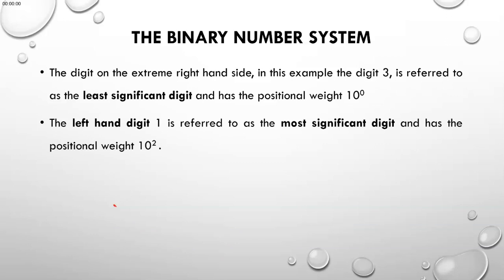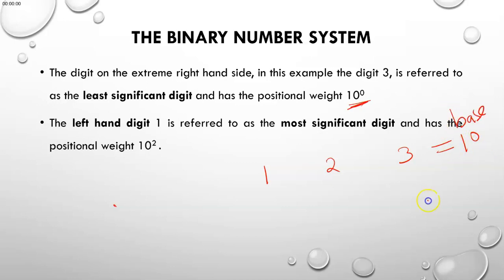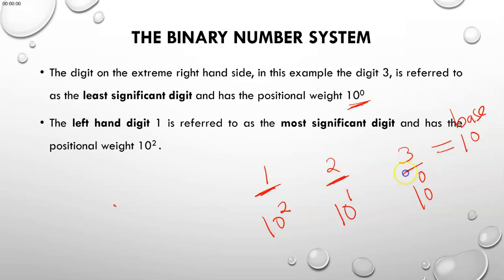This slide summarizes that the least significant digit is represented as 10 to the power 0. For the decimal number 123, which is base 10, we list 10 to power 0, 10 to power 1, and 10 to power 2 — these correspond to ones, tens, and hundreds respectively. The least significant digit has a positional weight of 10 to power 0.